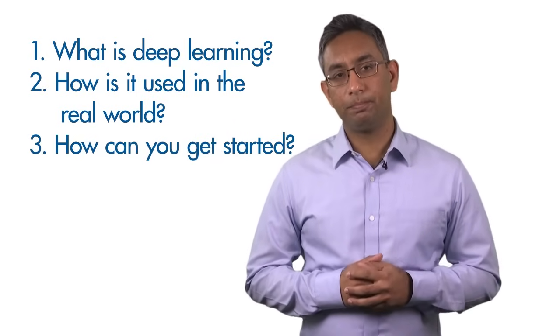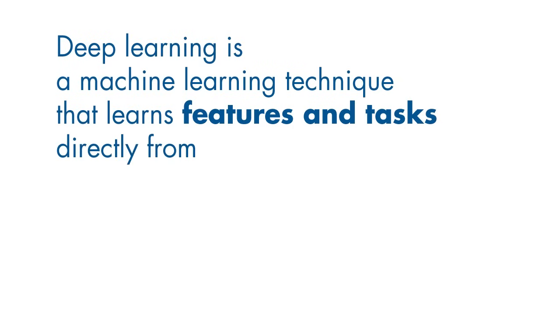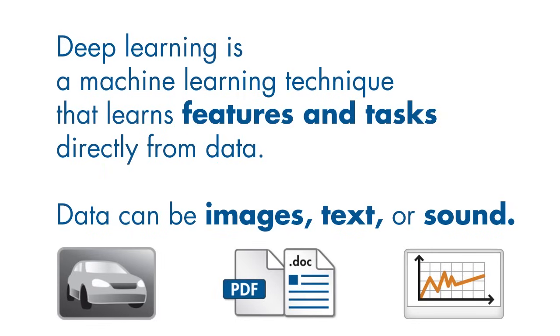So what is deep learning? Deep learning is a machine learning technique that learns features and tasks directly from data. Data can be images, text, or sound. In this video, I'll be using images, but these concepts can be used for other types of data too.